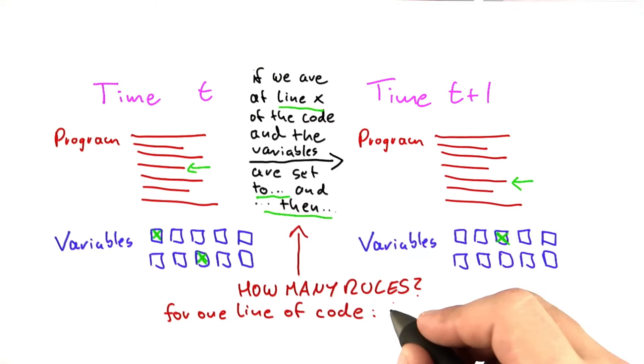So for one line of code, that's actually just O of one. It's a constant. And why is that?